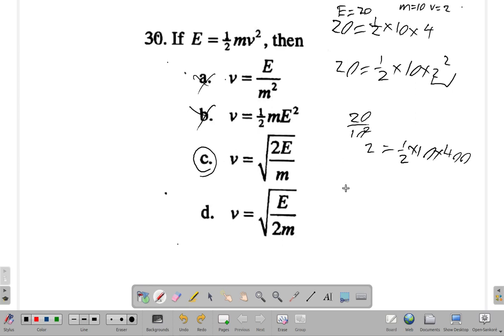If I tried this, v is 2. 2 = √(2 times E). E is 20. 2 times 20 over m. What is m? M is 10. So 2 times 20 is 40, so the square root of 40 over 10. So I get 40 over 10 is 4. The square root of 4 is 2, so it works out. C would be right.